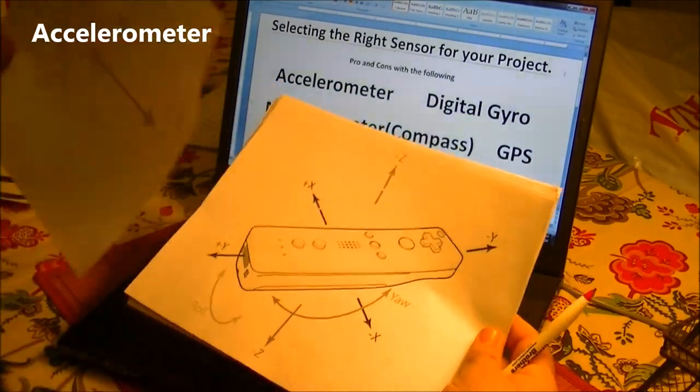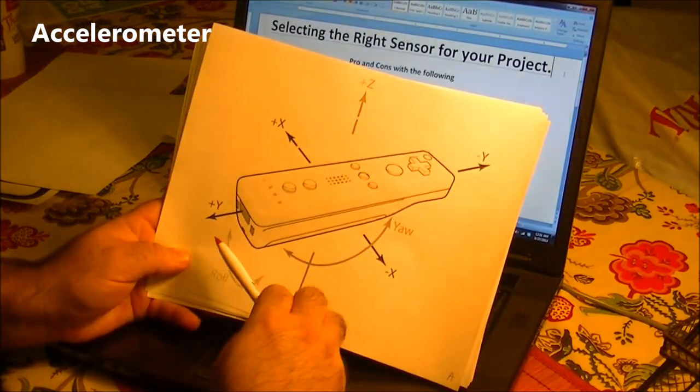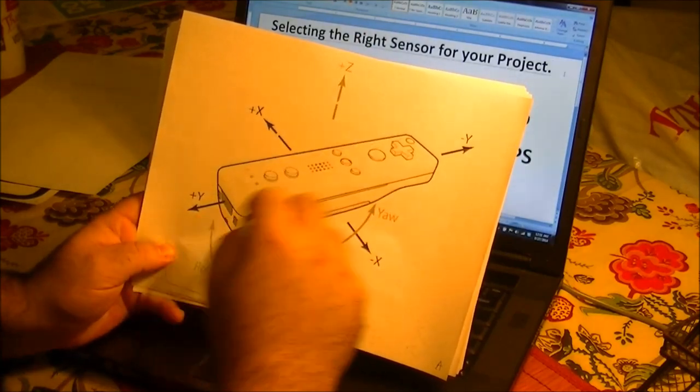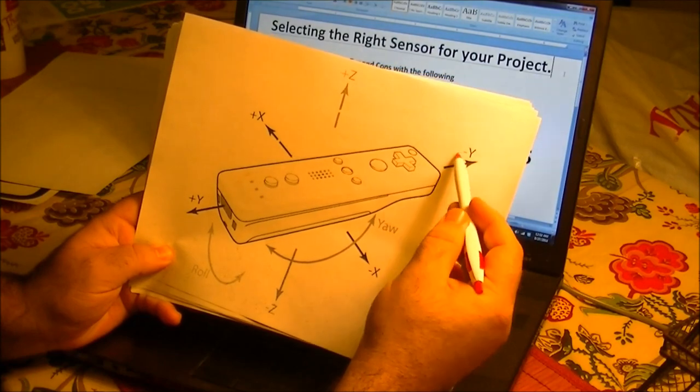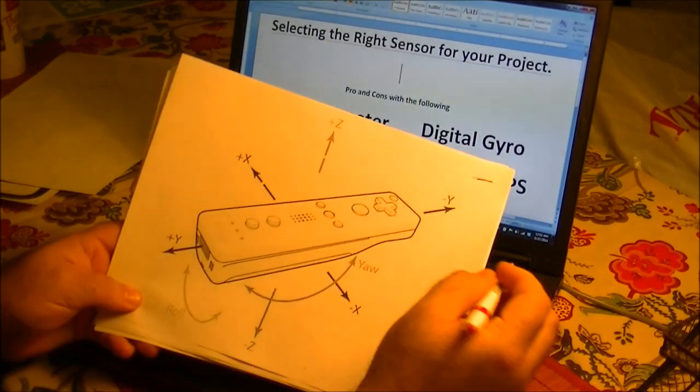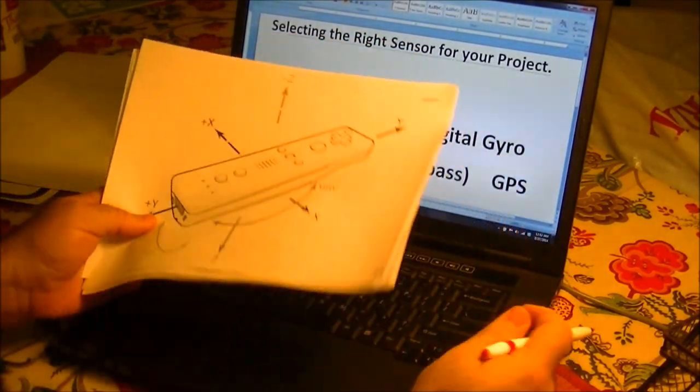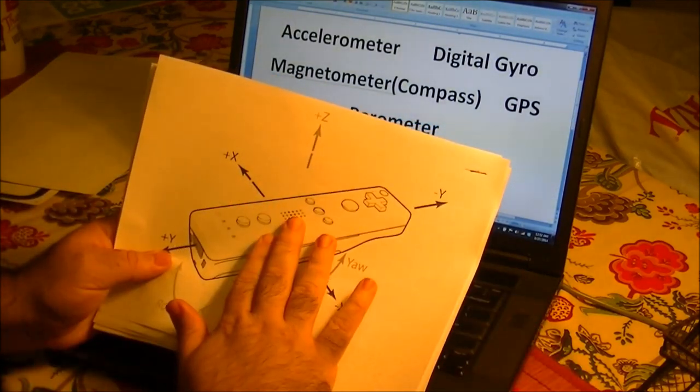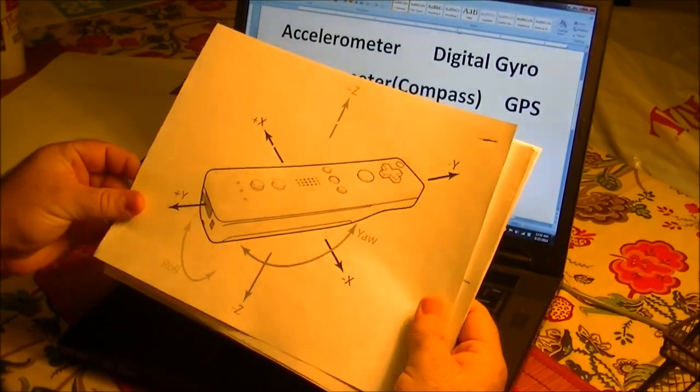The Wii controller is a motion sensitive controller that runs with an accelerometer - left to right, up, down, front, back. For the yaw and the tilt, the front actually has infrared and it detects through a sensor on top of the TV. That's how it knows if it's turned or not. The new one actually has a gyro. I'll tell you what the difference with that is.